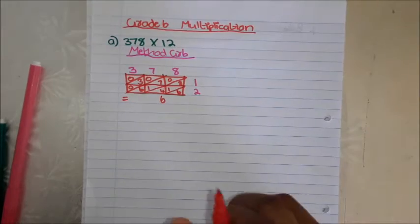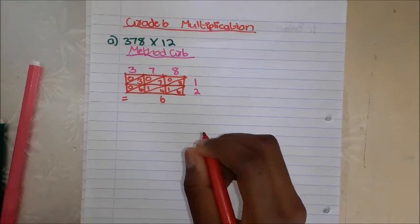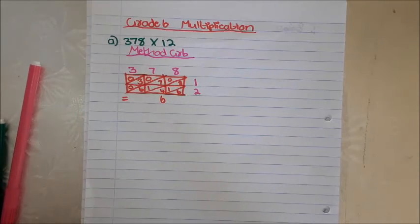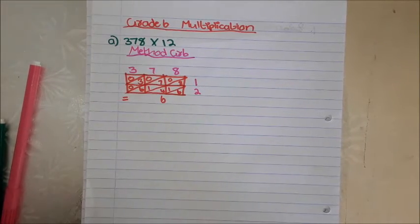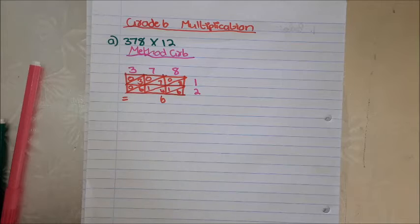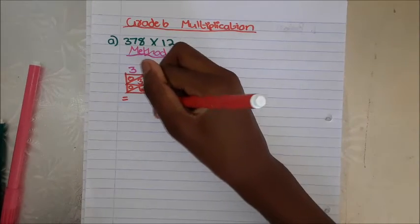From this block here it's 6. Then 8 plus 1 is 9. 9 plus 4: 10, 11, 12, 13. It's 13.